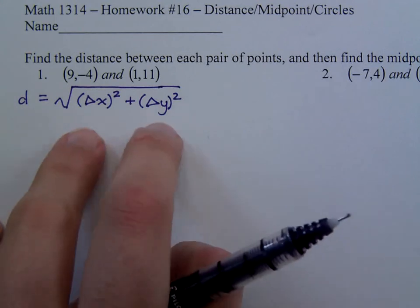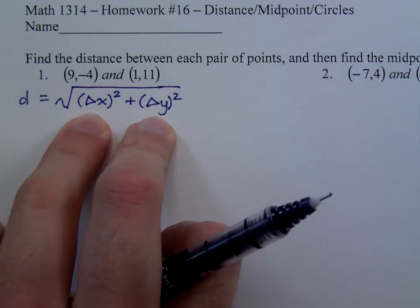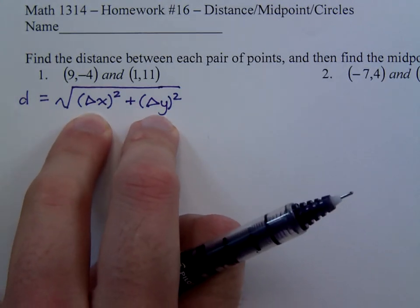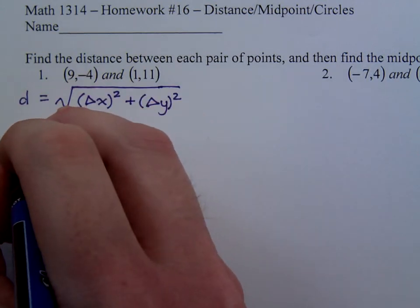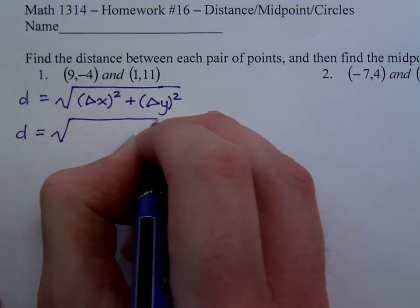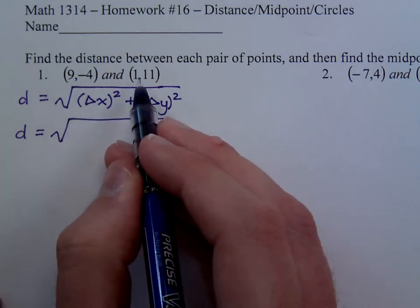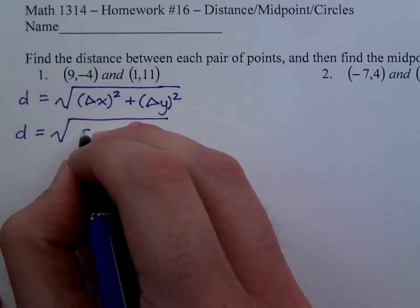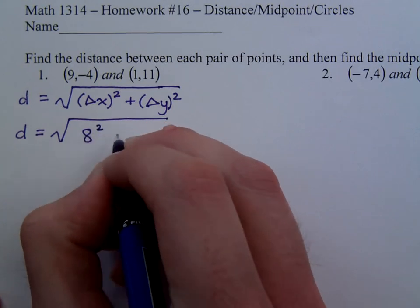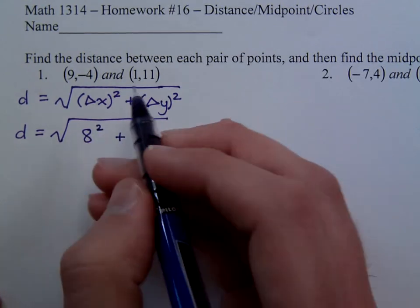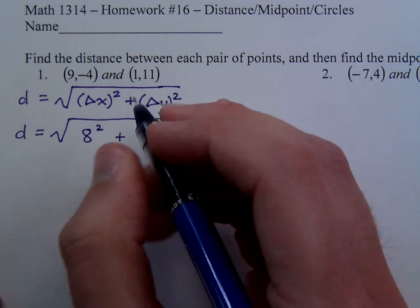Now, I do this instead of a more rigorous formula that you may see in the textbook because I think this is a lot easier. Your distance is the square root of, what's the change in x from 9 to 1? What's the difference between those guys? And that's just 8. So this is 8 squared plus, and the distance between negative 4 and 11 is 15.